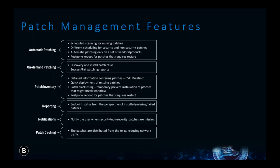A core component of our patch management software is the patch caching feature. The relays built into Gravity Zone can be repurposed as patch caching servers. In this case, the relay will reach out to the vendor website, download the patch, and then disperse it locally across an environment. This saves bandwidth compared to each computer individually reaching out to the vendor website and downloading the patch at the same time, which could potentially take up a ton of bandwidth on the customer's network. For patching, we support really any Windows desktop or server.